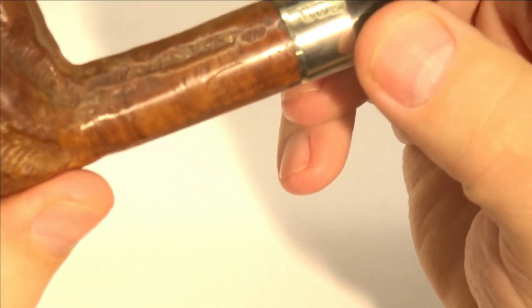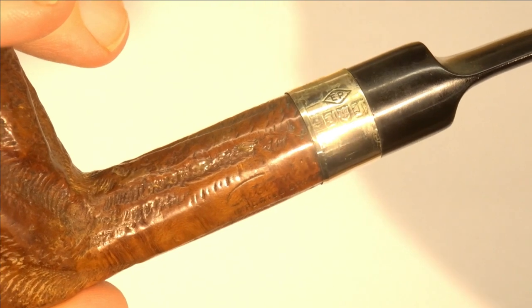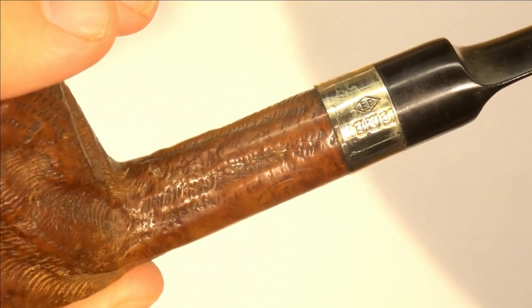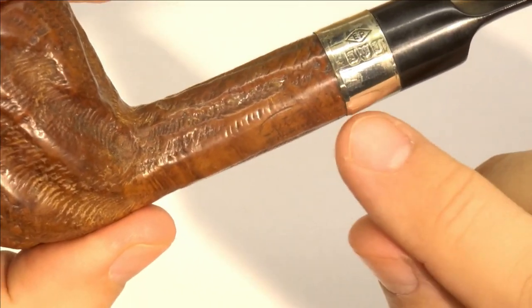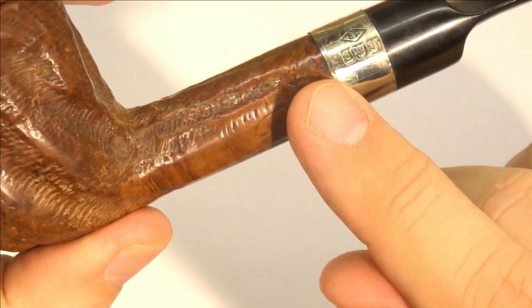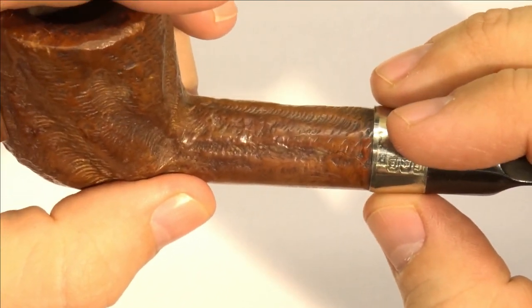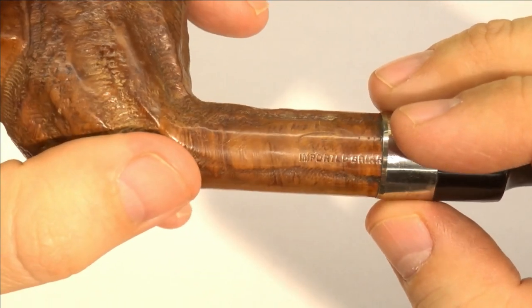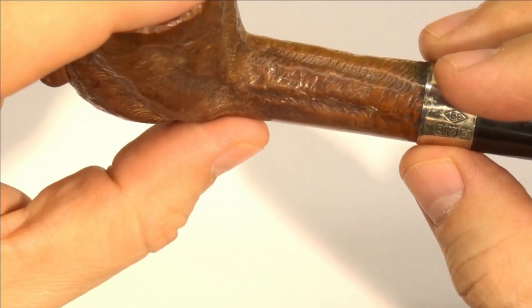They're right in this area here. Hopefully you'll be able to see that. It is custom built imported briar. Unfortunately this band is covering some of the stamping. So this band was very likely applied after the pipe was made and probably is an aftermarket adaptation.